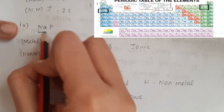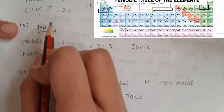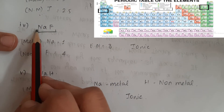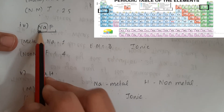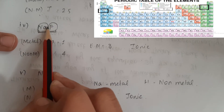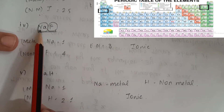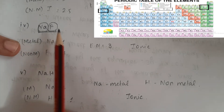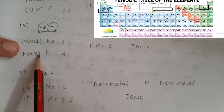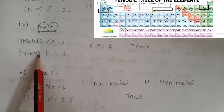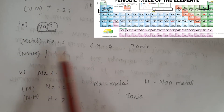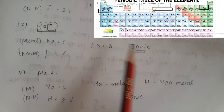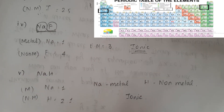So the next molecule is sodium fluoride. If you look at sodium — what type of atom? If you look at fluorine — what type of atom is sodium? Fluorine is non-metal. If you have metal and non-metal, then you look at ionic. The answer is ionic.